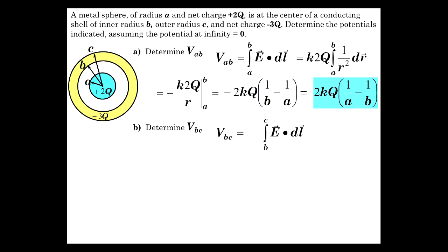So V_bc is integral from b to c of E dot dl. You know what the integral of that is because E is zero.